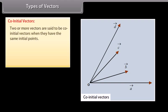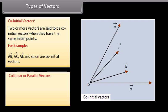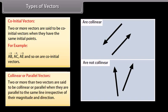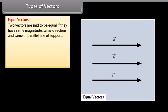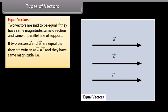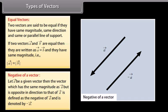Co-initial vectors: two or more vectors are said to be co-initial when they have the same initial points. Collinear or parallel vectors: two or more vectors are said to be collinear or parallel when they are parallel to the same line, irrespective of their magnitude and direction. Equal vectors: two vectors are said to be equal if they have same magnitude, same direction, and same or parallel line of support. Negative of a vector: the vector which has the same magnitude as vector A but is opposite in direction is defined as the negative of vector A, denoted by minus vector A.